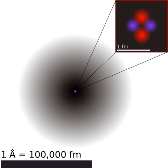For instance, the radii generally decrease along each period of the table, from the alkali metals to the noble gases, and increase down each group. The radius increases sharply between the noble gas at the end of each period and the alkali metal at the beginning of the next period. These trends of the atomic radii can be explained by the electron shell theory of the atom, and they provided important evidence for the development and confirmation of quantum theory. The atomic radii decrease across the periodic table because as the atomic number increases, the number of protons increases across the period, but the extra electrons are only added to the same quantum shell. Therefore, the effective nuclear charge towards the outermost electrons increases, drawing the outermost electrons closer. As a result, the electron cloud contracts and the atomic radius decreases.